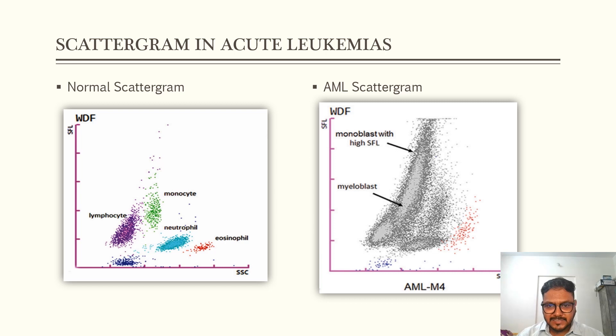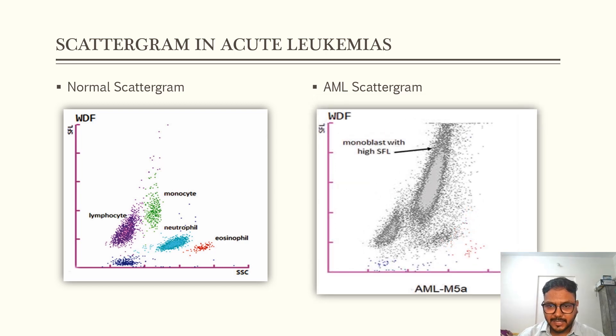Now coming to AML M5A that is acute monoblastic leukemia. Here also we are seeing one cluster of lymphocyte, here immature granulocyte and here we are seeing a cluster of monoblast. So here again we are seeing events with high SFL just like the previous graph. Because the membrane of the monoblast is more permeable it emits more amount of fluorescence. That is why we see events with high SFL.